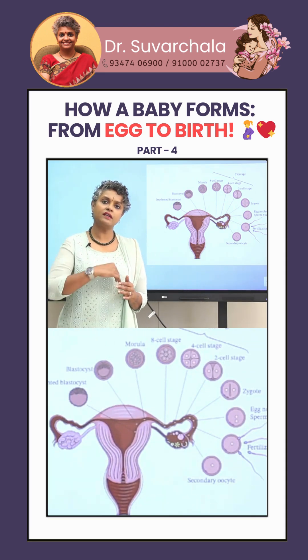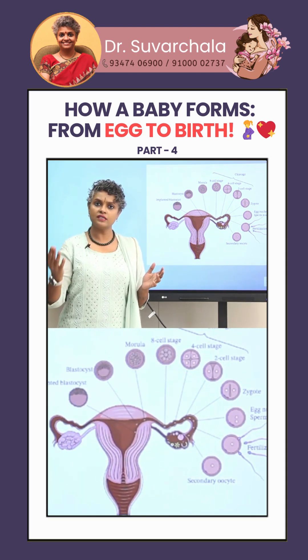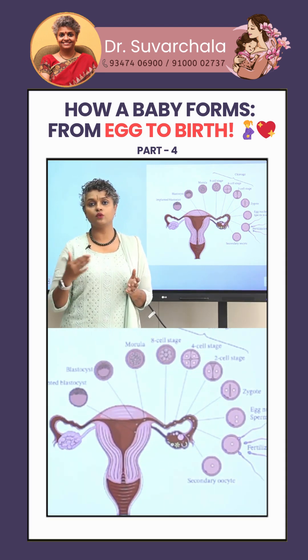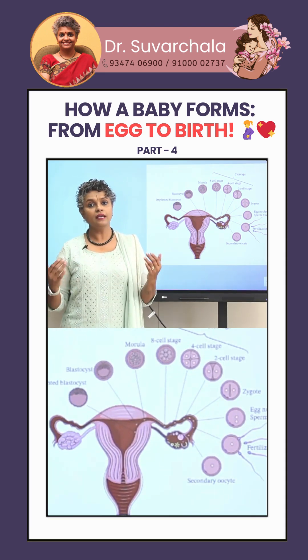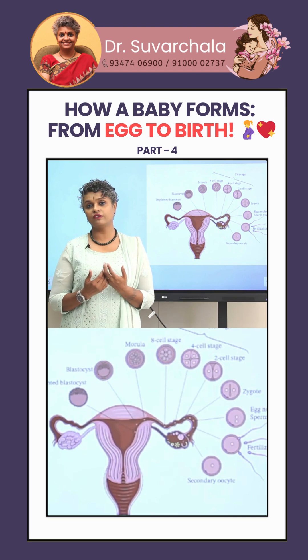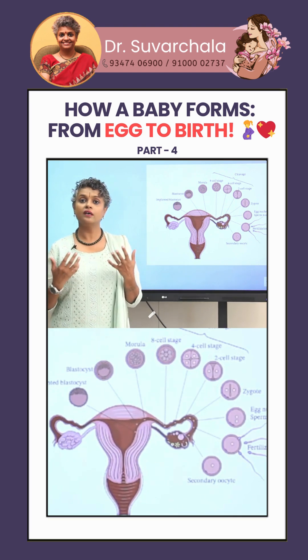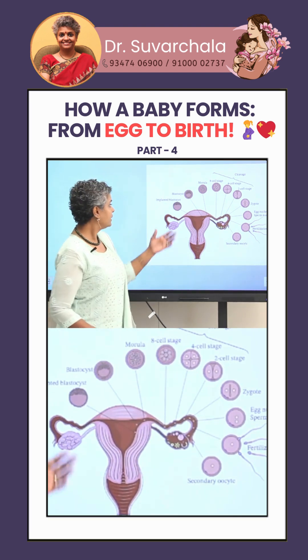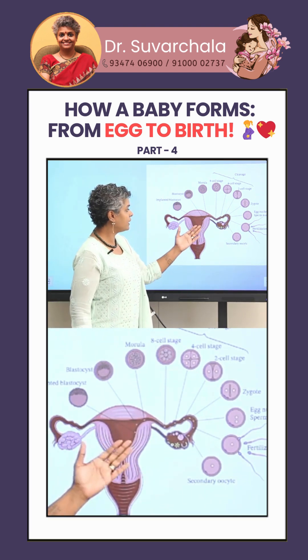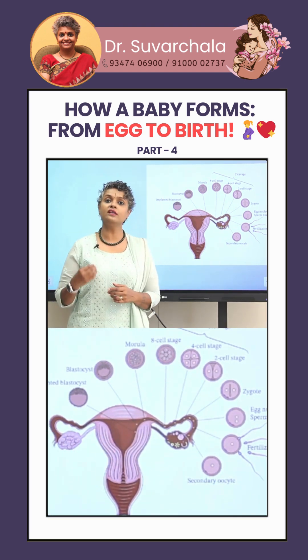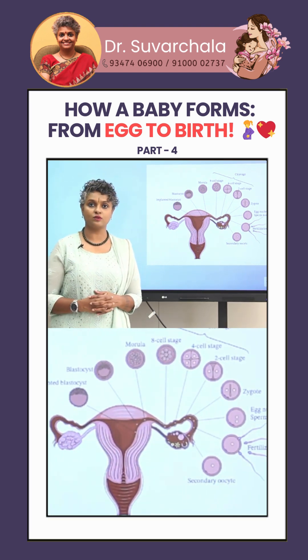At the blastocyst stage, there are outer cells which differentiate into the placenta, and inner cells which differentiate into a fetus. When it is implanted, it is called an implanted blastocyst.